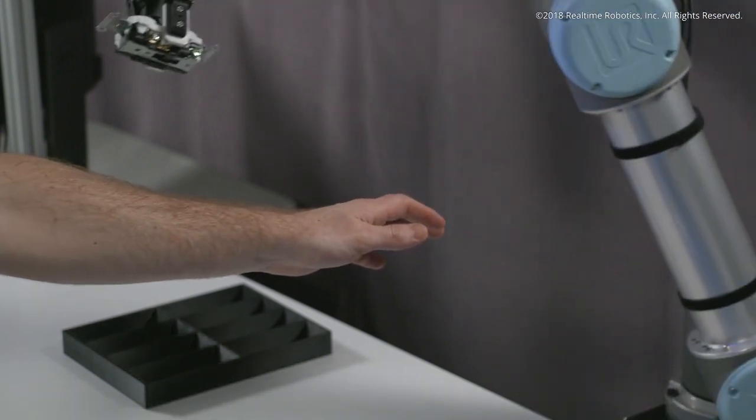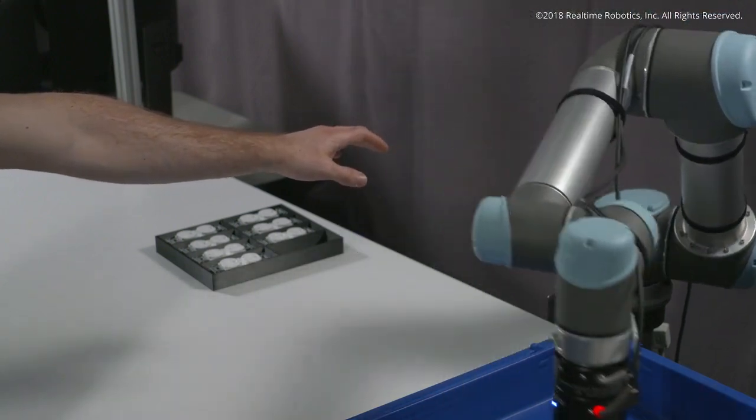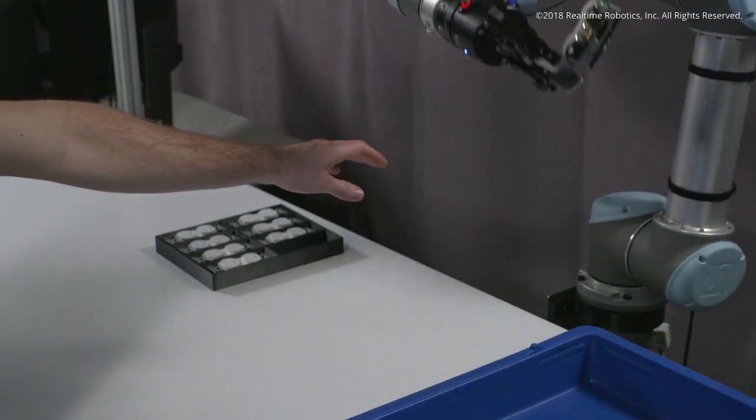When the path is obstructed, the robot will immediately pause and rapidly plan around the obstacle, maintaining operational throughput.